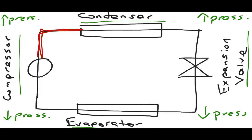Now we get to the condenser. In the condenser, the refrigerant loses heat to the surrounding areas. Again, I will use red lines to show that heat is being lost.